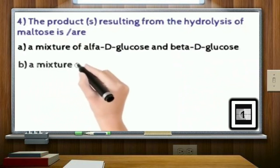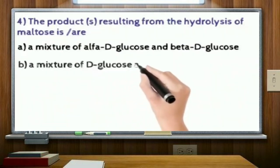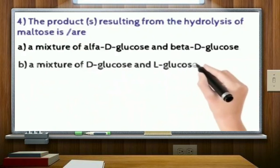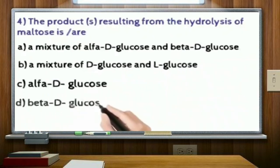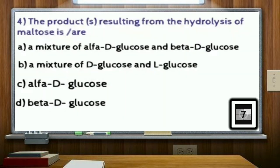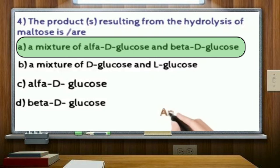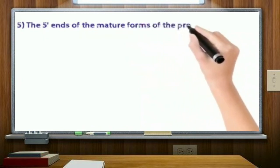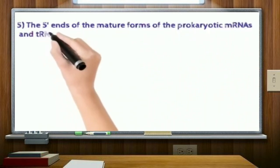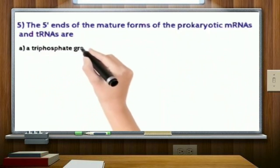The products resulting from the hydrolysis of maltose are: option A, a mixture of alpha-D-glucose and beta-D-glucose; option B, a mixture of D-glucose and L-glucose; option C, alpha-D-glucose; option D, beta-D-glucose. Correct answer: option A.